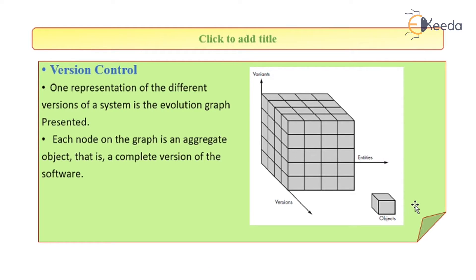Version control is represented using the evolution graph. Each node on the graph is an aggregate object — that is, a complete version of the software. There are three axes: entities, variants, and versions. An entity is a software module. A variant is the change, and on each object or module, a change will lead to a next version. Suppose there is an entity X upon a variant or change V — it creates a new version X1. After a second change, it creates version X2. All of them have to be maintained.